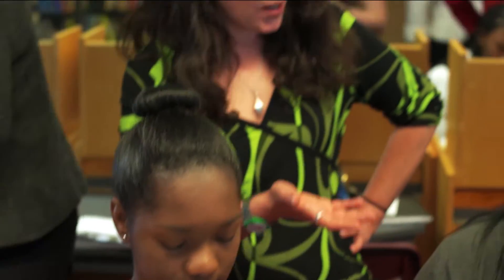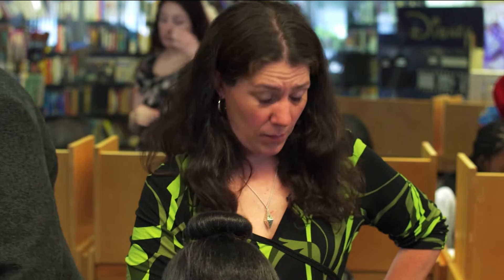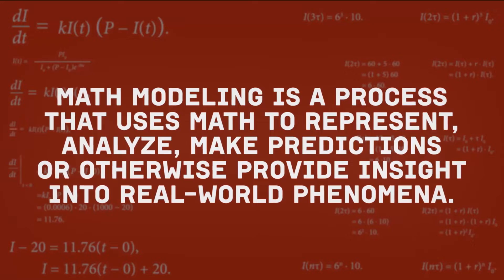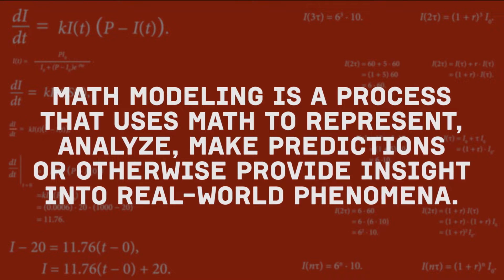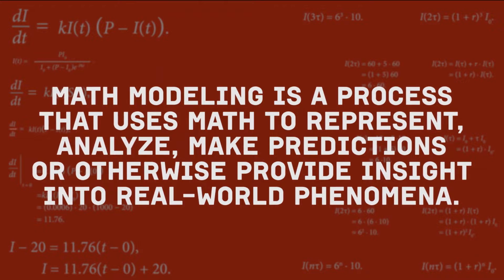How many times can a cat have kittens? Modeling is a process that uses math to represent, analyze, make predictions, or otherwise provide insight into real-world phenomena. To model, you'll combine creative thinking and math skills to define and develop the solution to your problem.